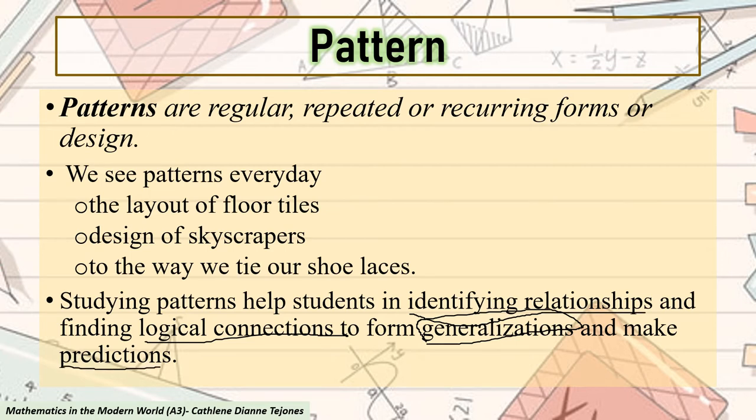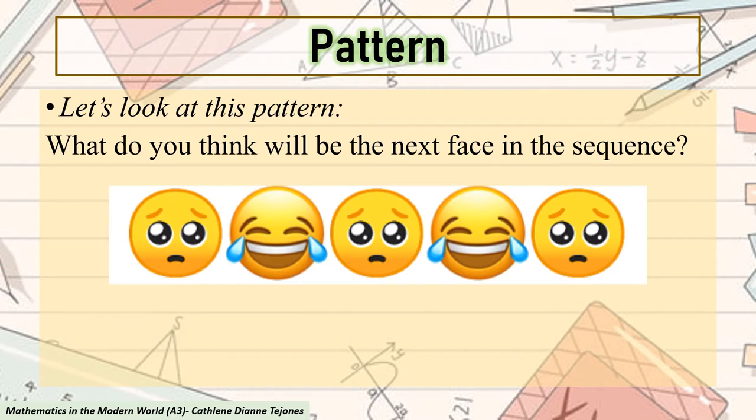Let's look at this pattern. What do you think will be the next phase in the sequence? It should be easy enough to note that the pattern is made up of only two emojis. One that is sad and one that is laughing. Beginning with a sad phase, two phases then alternate.